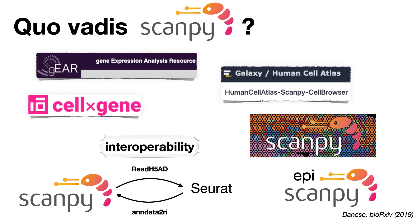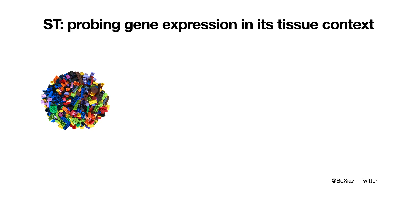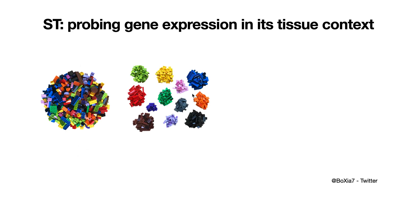Adding more to the functionality of ScanPy, we not only have single cell unsorted data, but we also go spatial with ScanPy version 1.5. When you have single cell RNA data, you get expression metrics and transcriptomic properties, but what you miss is how these cells are embedded in their environment.